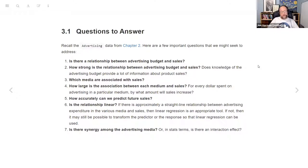Which media are associated with sales? The variables in that dataset are TV, radio, and print advertising budget. How large is the association between each medium and sales? For every dollar spent on advertising in a medium, by what amount do we expect sales to increase? How accurately can we predict future sales? Is the relationship linear? If there's approximately a straight line relationship, then linear regression is an appropriate tool. And finally, is there synergy among the media, or in stats terms, are there interaction effects where the variables affect one another?